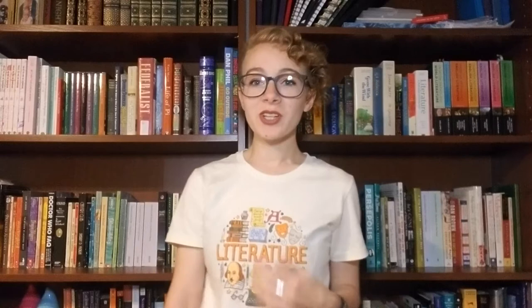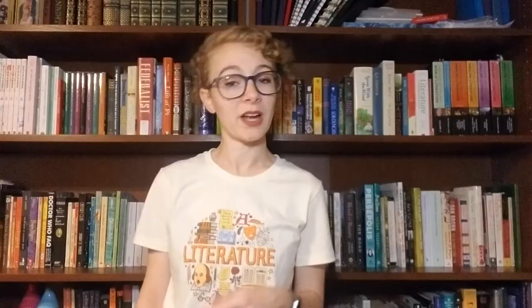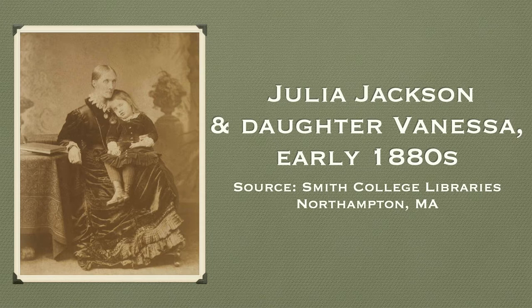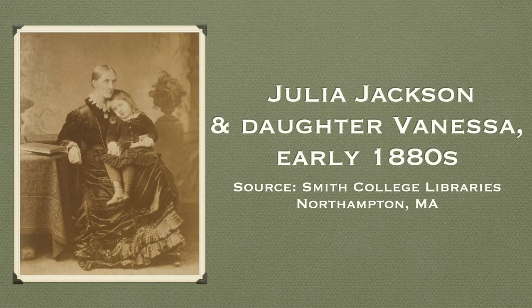In order to understand why Woolf took this stance, it's important to look at her life. Virginia Woolf was born in London, England in 1882. Her father was Leslie Stephen, the first editor of the Dictionary of National Biography. Her mother was Julia Jackson, who was well known for her self-sacrificing personality and was considered to be the ideal for Victorian women. She was the third of four children with two brothers and one sister, and she and her sister were never given the same opportunities or education as their brothers, which bothered Woolf.